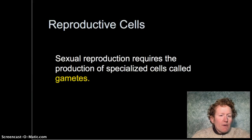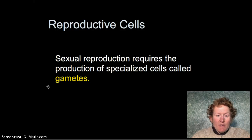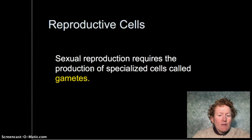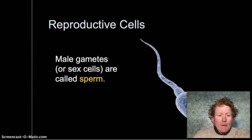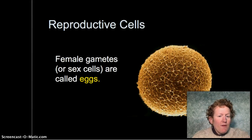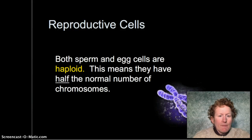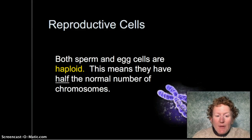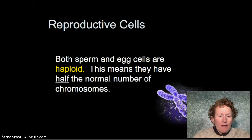First, let's talk about reproductive cells. Meiosis creates reproductive cells. Sexual reproduction requires the production of specialized cells called gametes. Those gametes in males are called sperm, and in females they're called eggs. Reproductive cells — both eggs and sperm — are haploid, which means they have half the number of chromosomes of a normal cell.